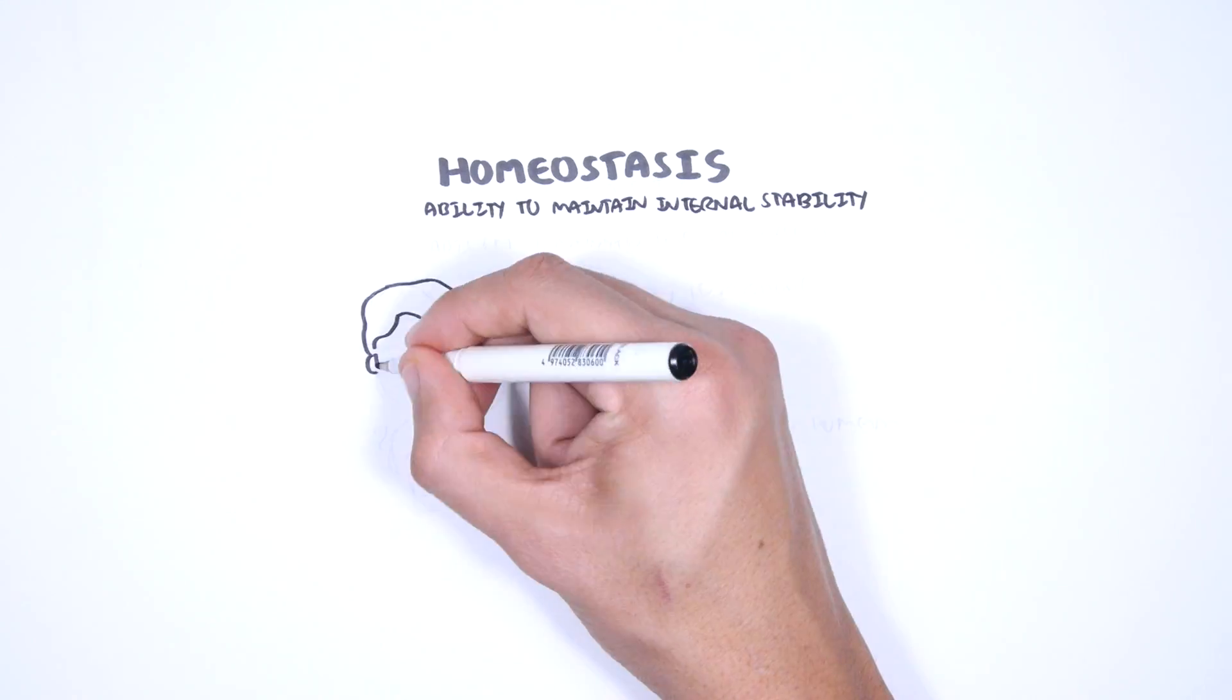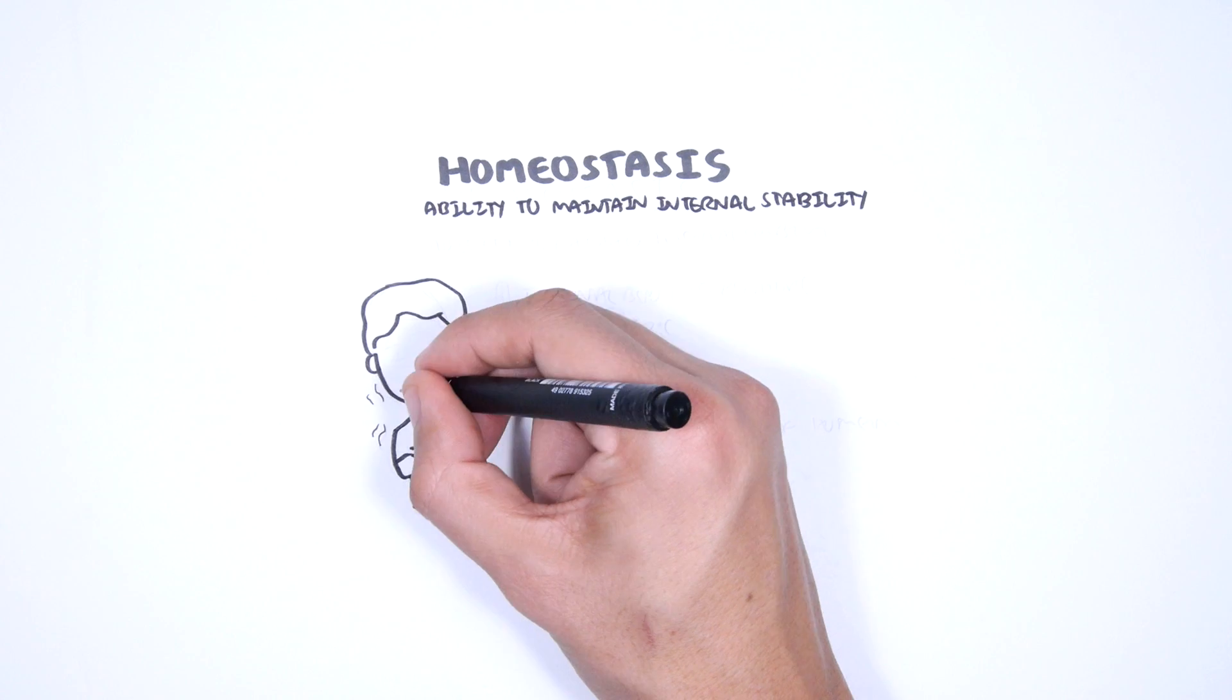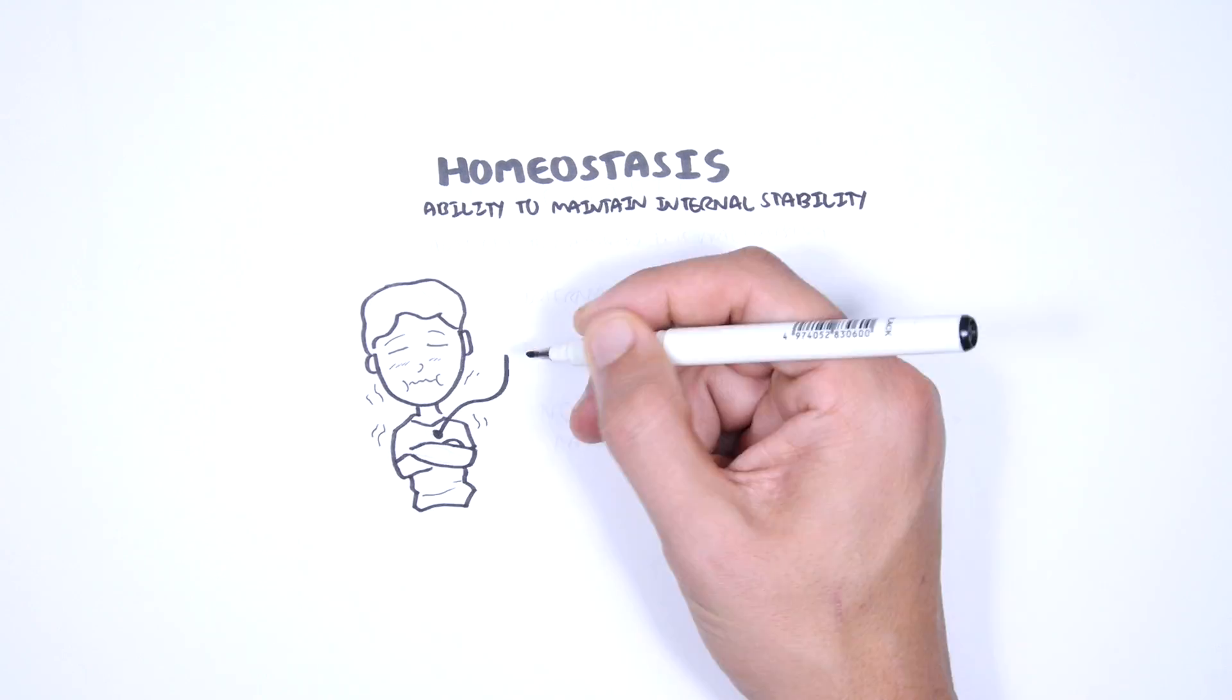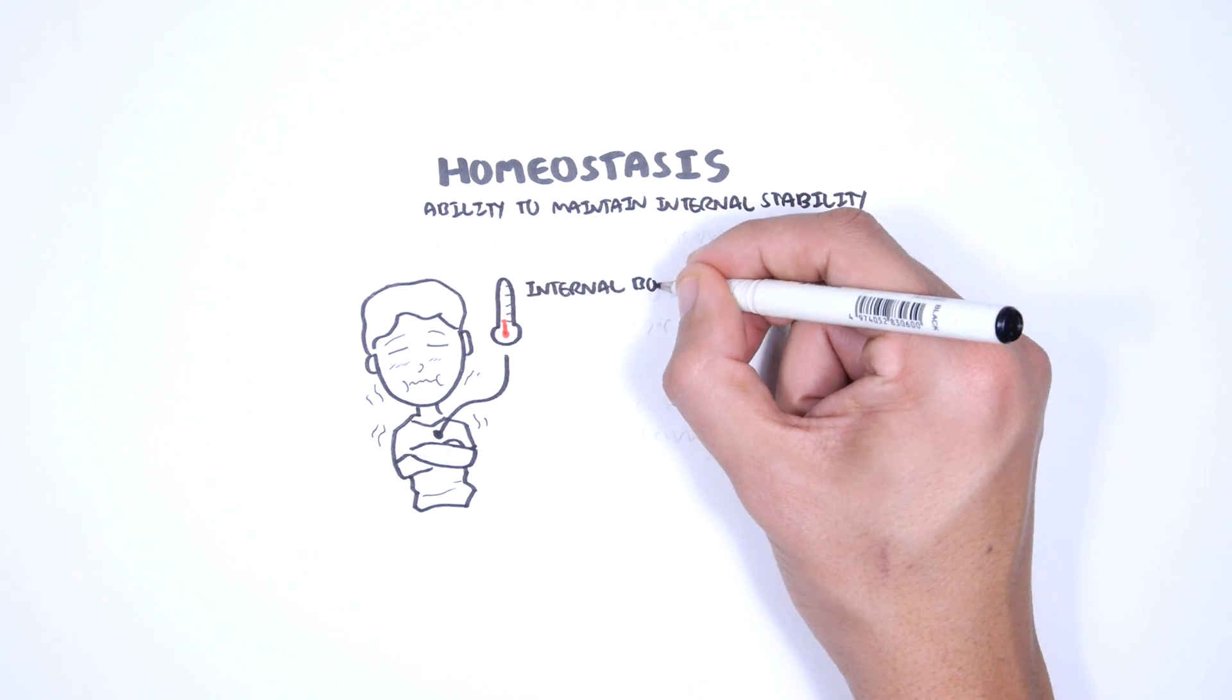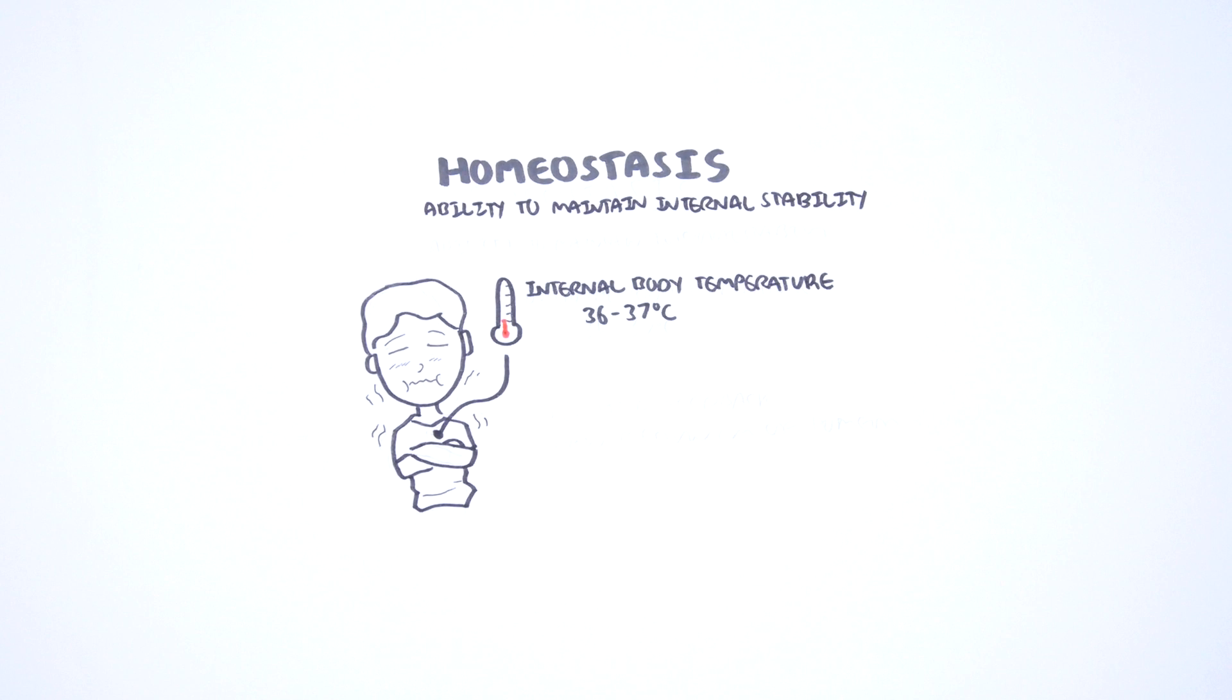For example, if a person stands in a cold wintry night or hot sub-Saharan Africa, the person is able to maintain a normal internal body temperature between 36 to 37 degrees or 97 to 99 degrees Fahrenheit through homeostasis.